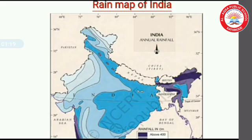Given here is the rainfall map of India. It gives the average annual rainfall in different regions of our country.